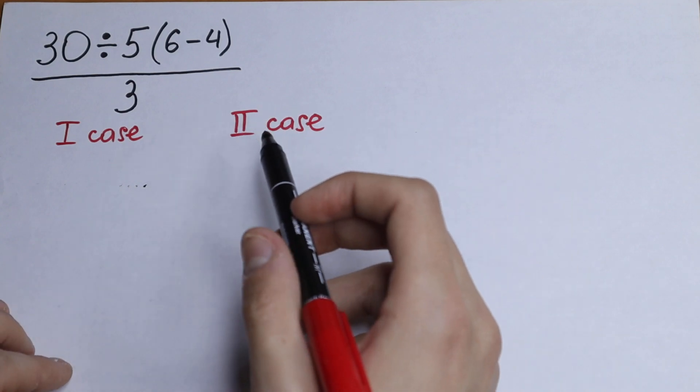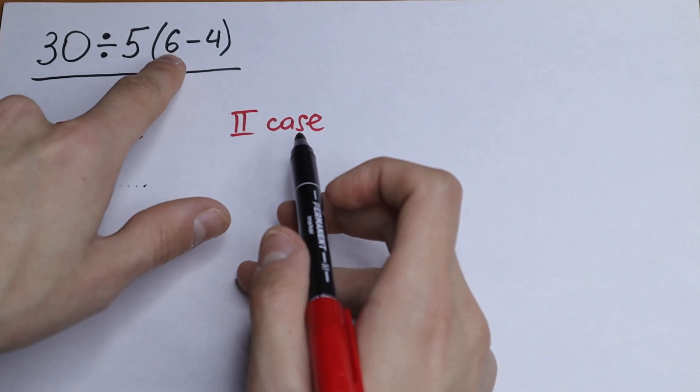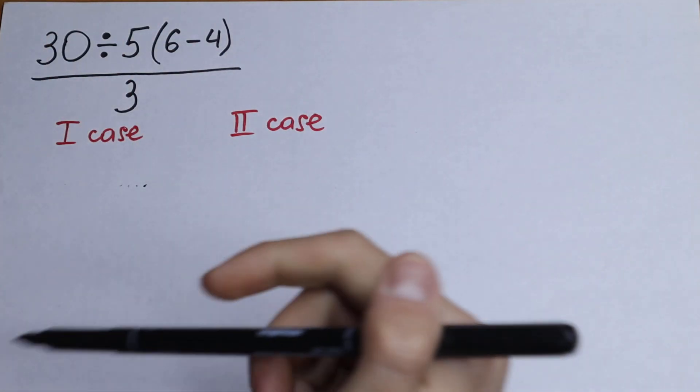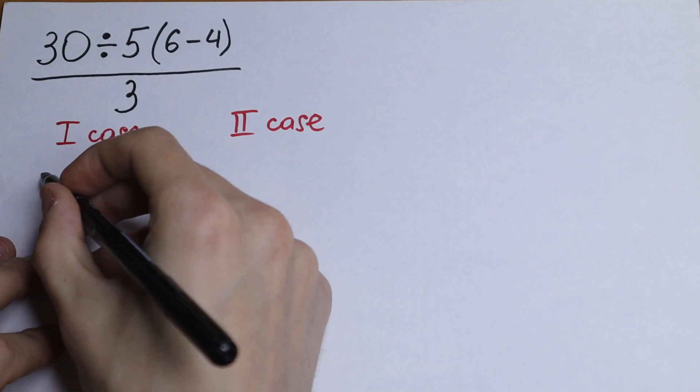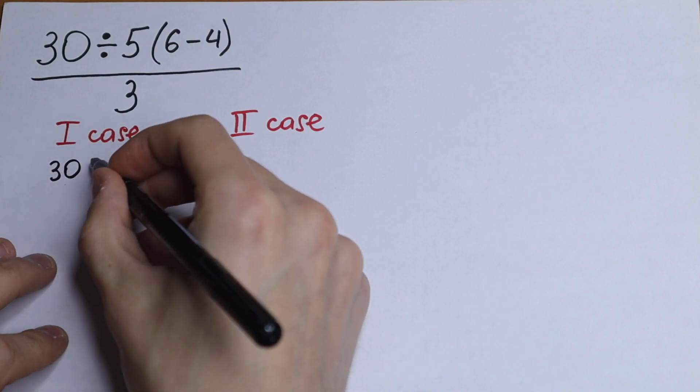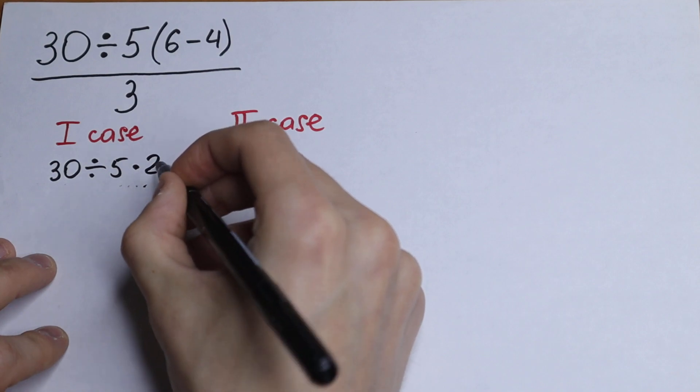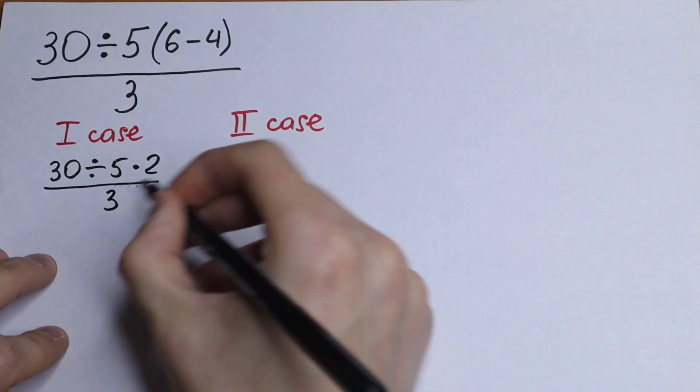So how can you solve this? First of all we know that the first step is our parentheses. So let's write 6 minus 4, it will be 2, so we'll have the first case: 30 divided by 5 times 2 over 3.